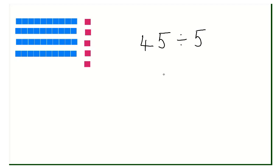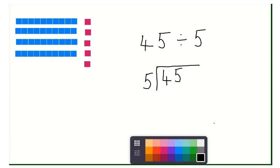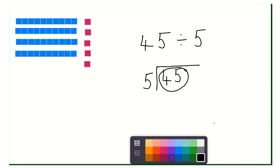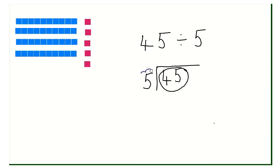We can also see it written like this: 45, and then we divide it into 5. Whenever you see it written that way, remember that this is our total amount, and this is what we're dividing it into. Let's have a quick look at how we would work this out.